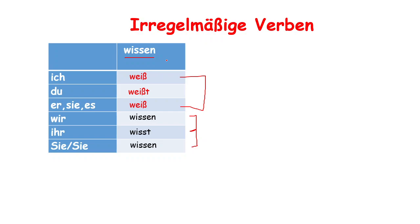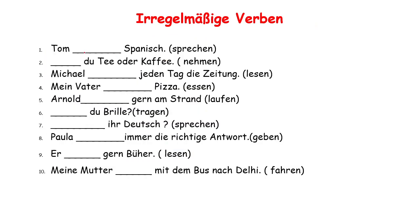Let's see some more examples and how we use these verbs in sentences. Tom is er/sie/es — sprechen becomes spricht. Tom speaks Spanish. Er/sie — nehmen changes to nimmst. Nimmst du einen Kaffee? Do you take a coffee? Michael liest jeden Tag die Zeitung — Michael reads the newspaper every day.